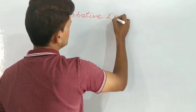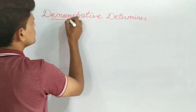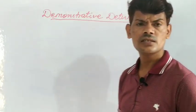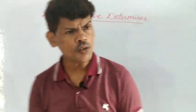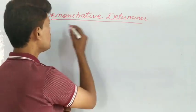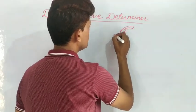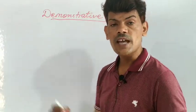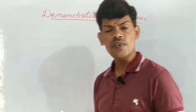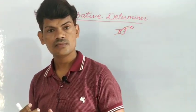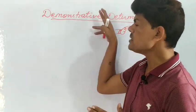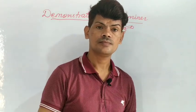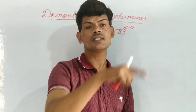Demonstrative determiner. 'Demonstrate' means indicate, point to the objects. Demonstrative determiners always point to the objects. The symbols of demonstrative determiner are: this, that, these, those. For example: this pen is mine, that pen is yours, these girls are very intelligent, and those boys are very naughty.